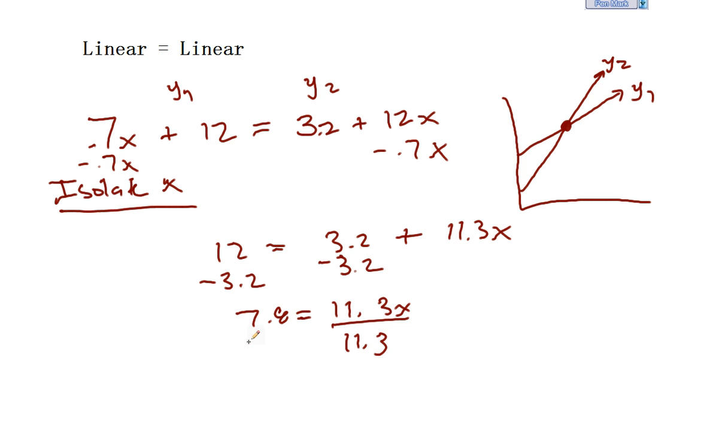And now I would simply divide both sides by 11.3, and that would isolate x. So all I would have to do is plug into my calculator and figure out what this would be equal to exactly, and that would be this point right here, 7.8 over 11.3.